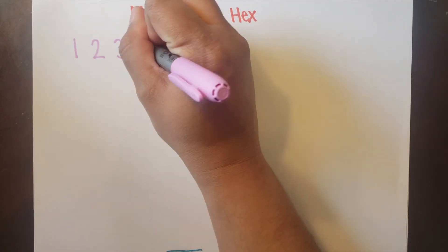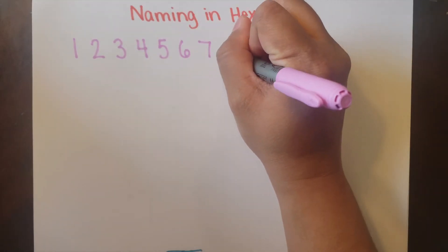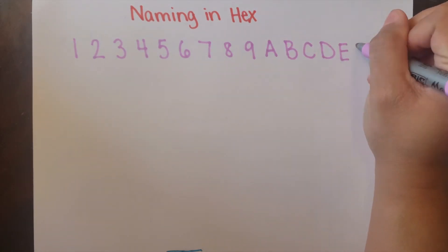So writing the numbers in hexadecimal are rather simple. It just goes 1, 2, 3, 4, 5, 6, 7, 8, 9, A, B, C, D, E, F.